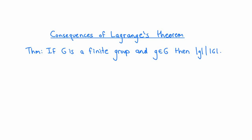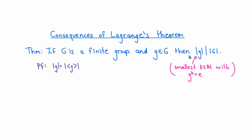I'd like to wrap up by showing a few consequences of Lagrange's theorem. The first important consequence is that if G is any finite group and g is any element of G, then the order of the element g must divide the order of the group G. Remember that the order of an element g is the smallest natural number k such that g to the k equals the identity, or infinity if no such k exists. In a finite group every element has finite order. The proof is easy: the order of an element equals the order of the cyclic subgroup it generates, and by Lagrange's theorem that subgroup's order must divide the order of G.